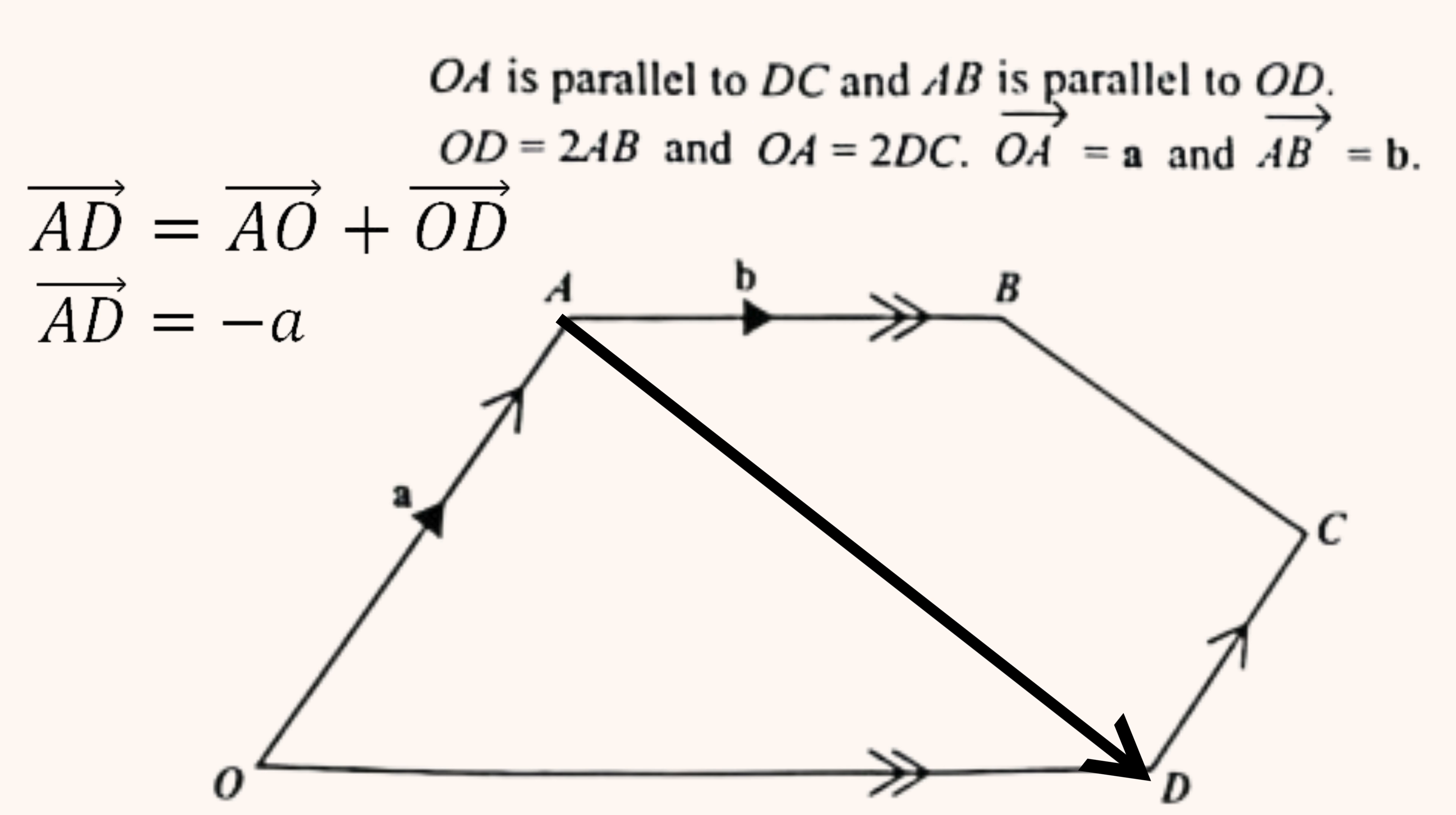We do not know the vector OD. However, we know that OD is 2 times AB, which means that OD is 2 times b, since vector AB is equal to b. Hence the vector AD is minus a plus 2b.